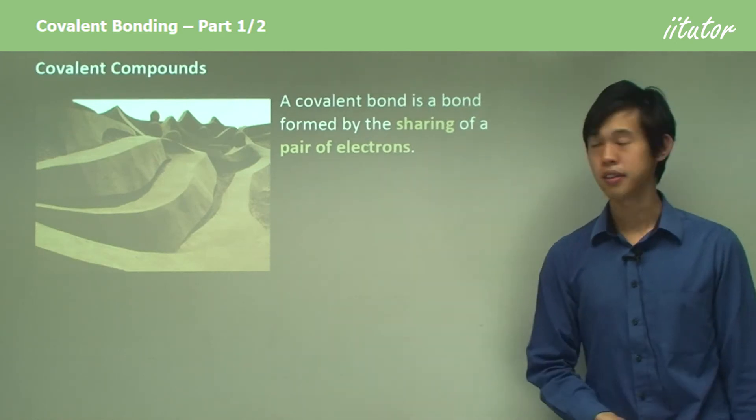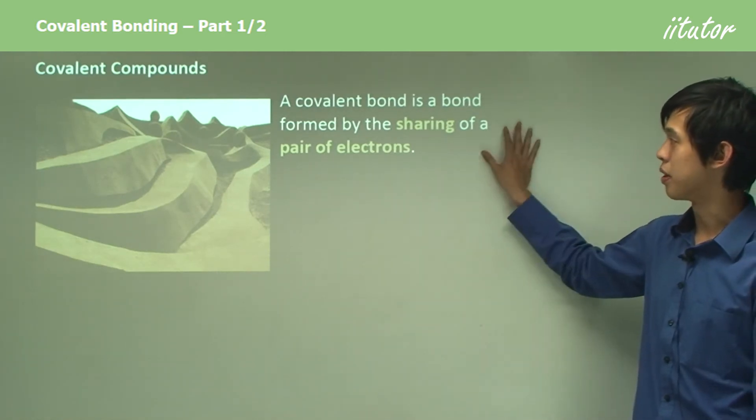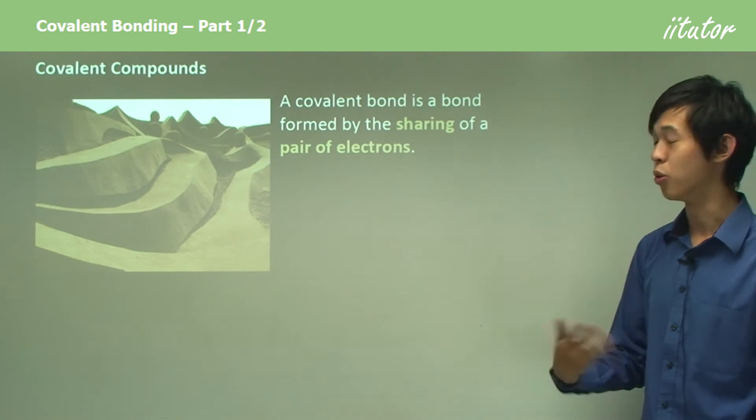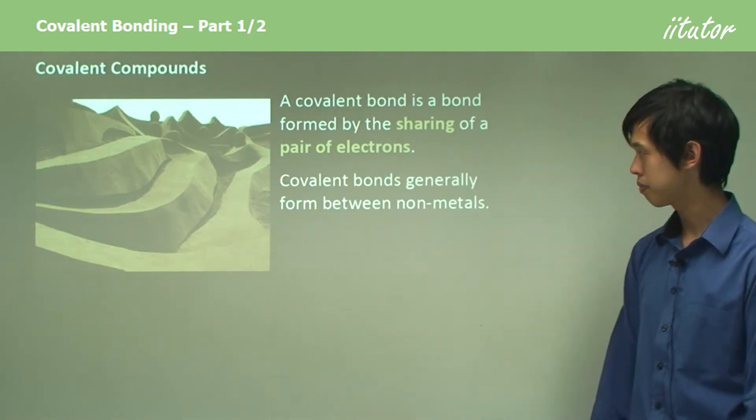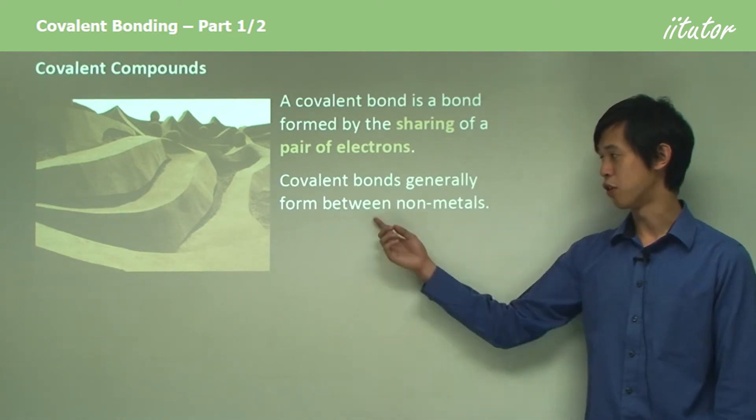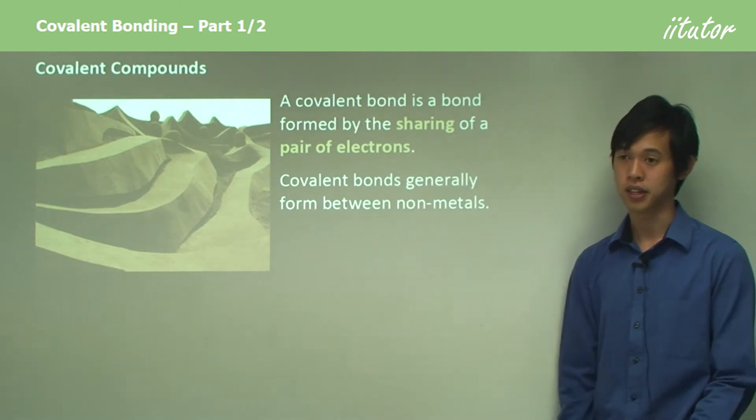A covalent compound: a covalent bond is a bond formed by the sharing of a pair or more pairs of electrons. One or more pairs of electrons. Covalent bonds generally form between non-metals. That's how we generally see them, mostly with non-metals.